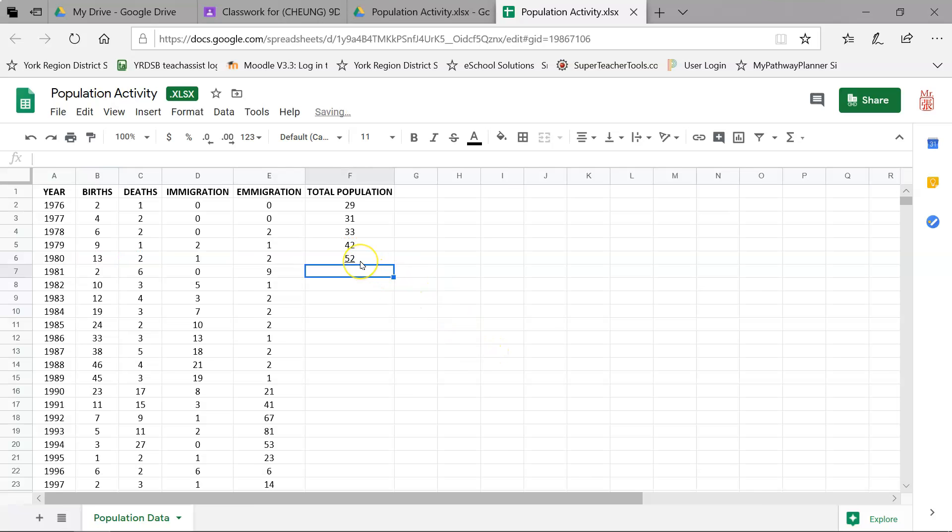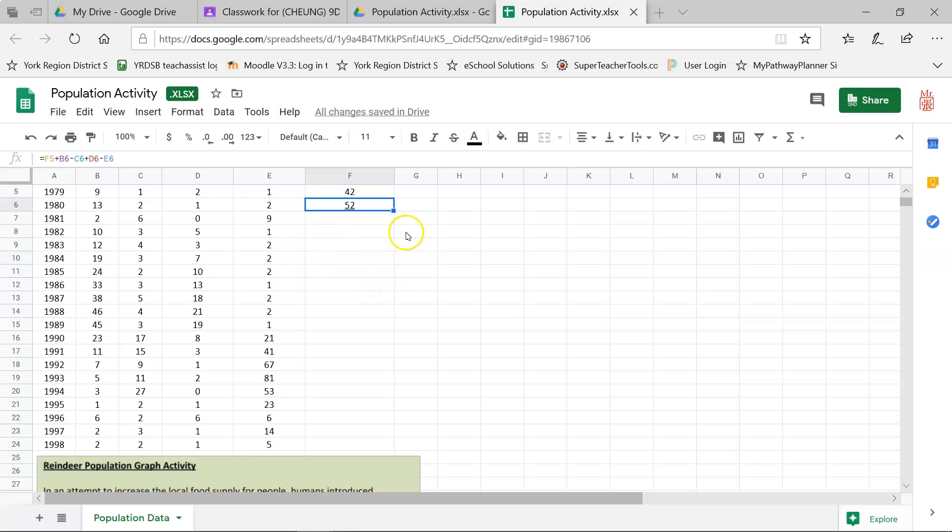And it calculates it for you. Now here's where the magic starts. We can get Excel to repeat this equation for us. So what I'm going to do is I'm going to drag this little blue square at the bottom right hand corner. Click on it. And drag it over the rest of the chart. All the way up to 1998. Once I let go, everything is calculated for me.